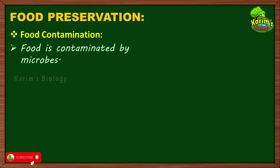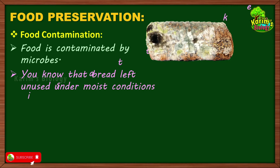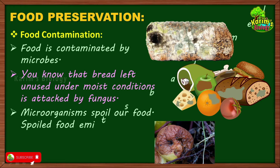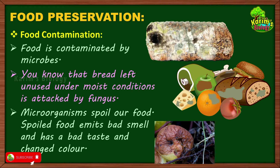When food is contaminated by microbes — contamination is the growth of harmful microorganisms on food material — it is called food contamination. For example, bread left unused under moist conditions is attacked by fungus. If you open a bread packet and don't properly close it, within a few days you will observe the growth of fungus like bread mold, which spoils the bread because bread is rich in nutrients.